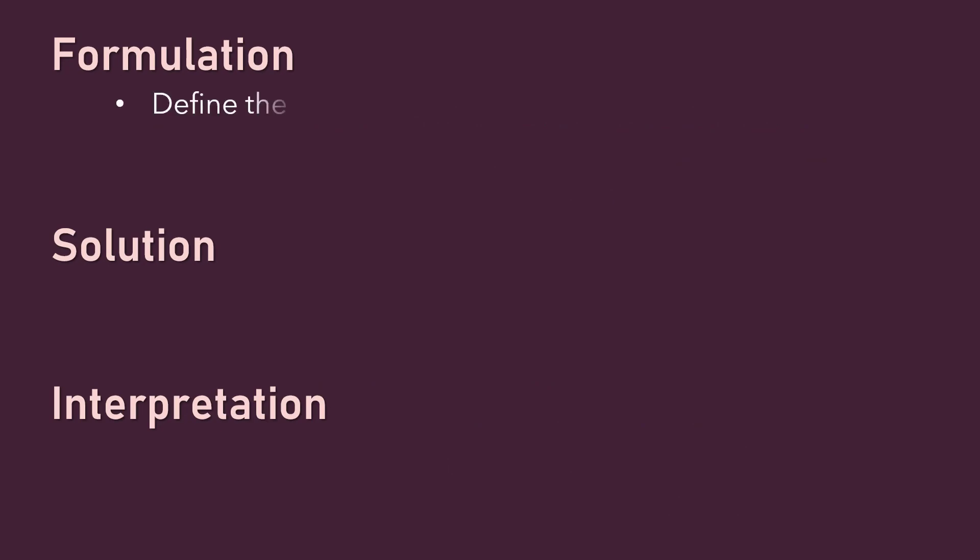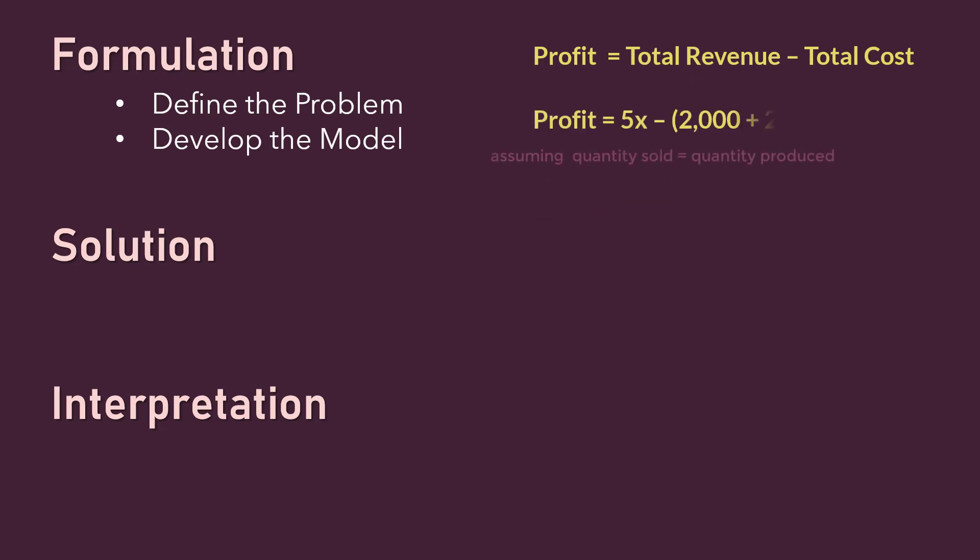Under formulation, we first define the problem. Suppose the problem is to determine profit. Then we can develop a profit model, say, total revenue minus total cost. Suppose selling price per unit is $5, then total revenue is 5x. Suppose fixed cost is $2,000 and variable cost is $2 per unit, then total cost is $2,000 plus 2x. Next, we acquire input data. Suppose our input value x is 500 units.